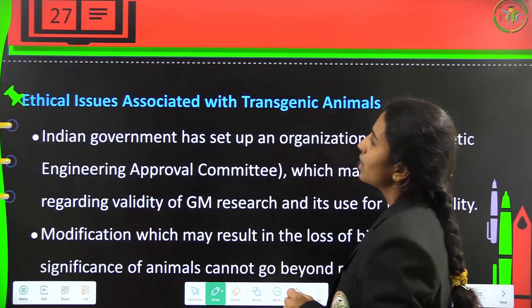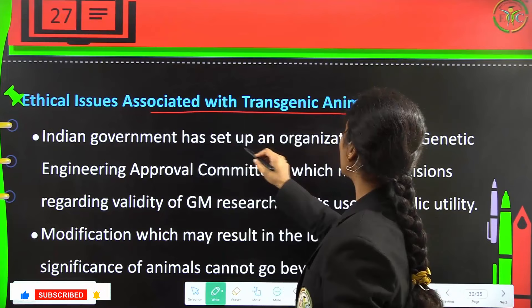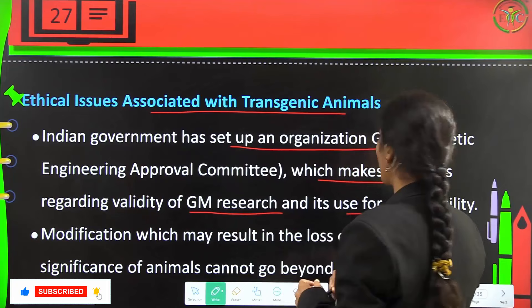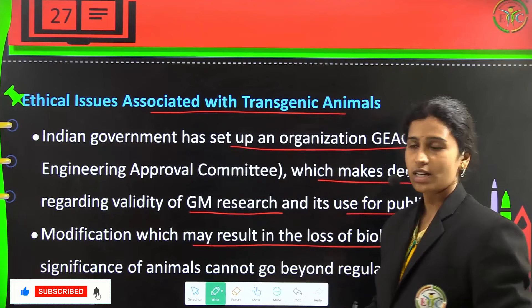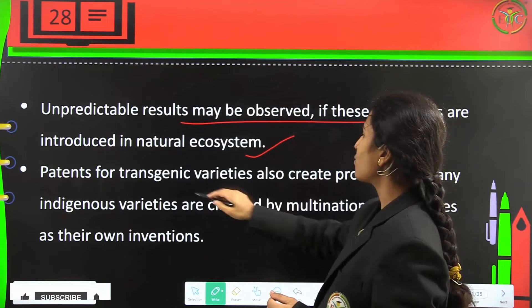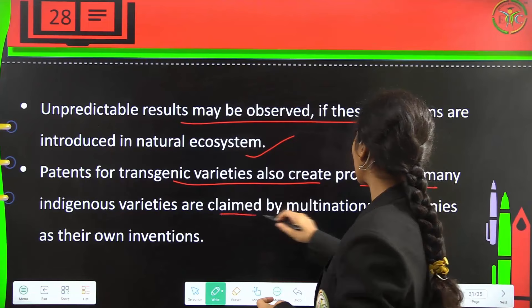Ethical issues associated with transgenic animals: the Indian government has set up GAEC — Genetic Engineering Approval Committee — which makes decisions regarding the validity of GM research and its use for public utility. Modifications that may result in the loss of biological significance of animals cannot go beyond regulations. Unpredictable results may be observed if these organisms are introduced into natural ecosystems. Patents for transgenic varieties also create problems as many indigenous varieties are claimed by multinational companies as their own inventions.